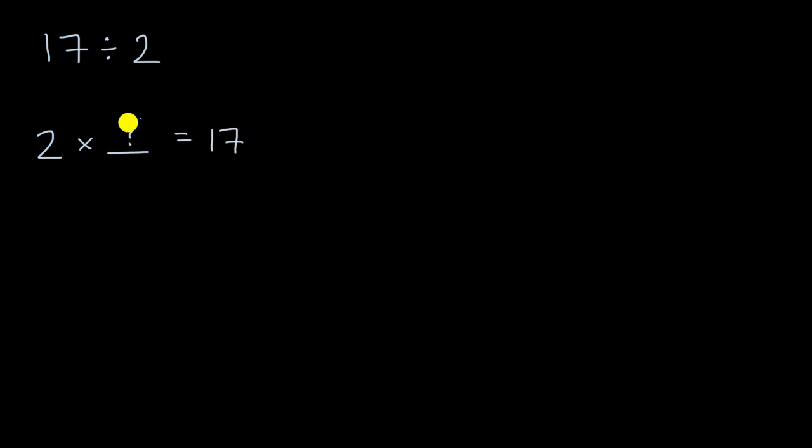There's no whole number that I could put here that gets us to 17. We know that 2 times 8 is a little bit less than that. 2 times 8 is equal to 16. And we know that 2 times 9 is going to be a little bit more than that, is equal to 18.